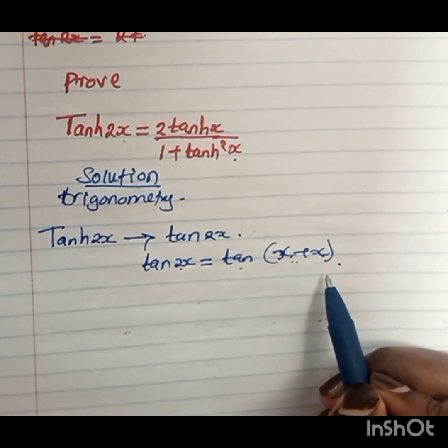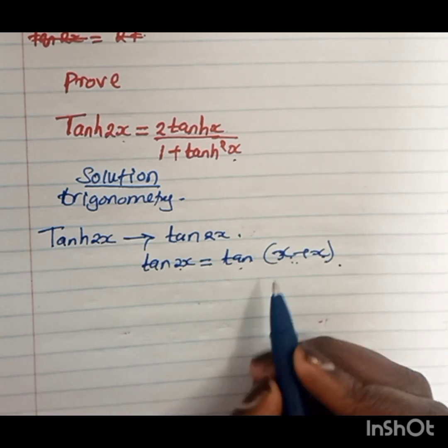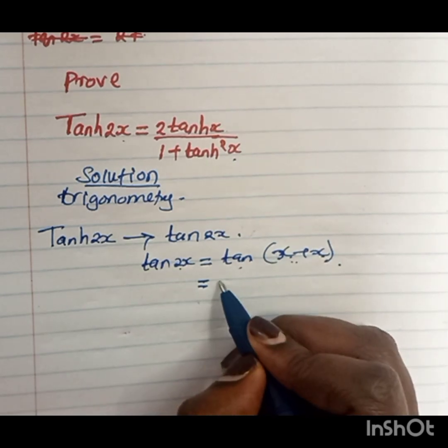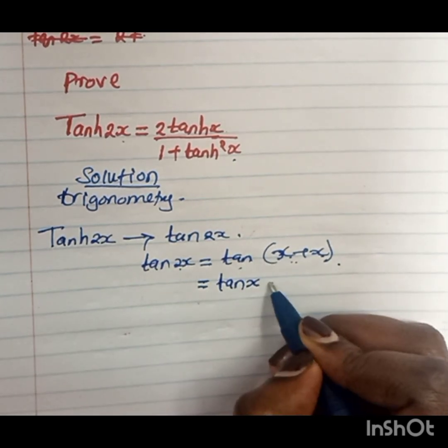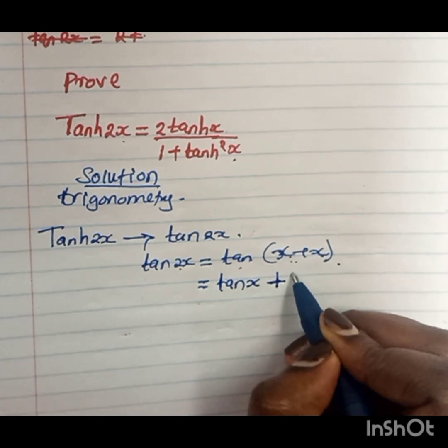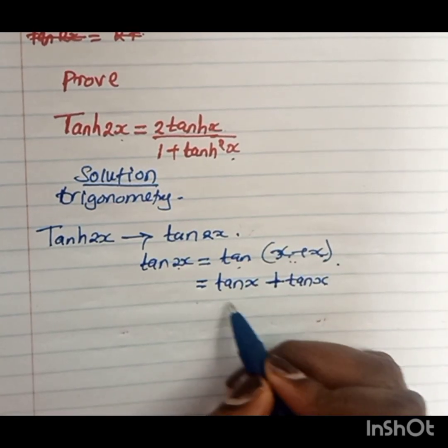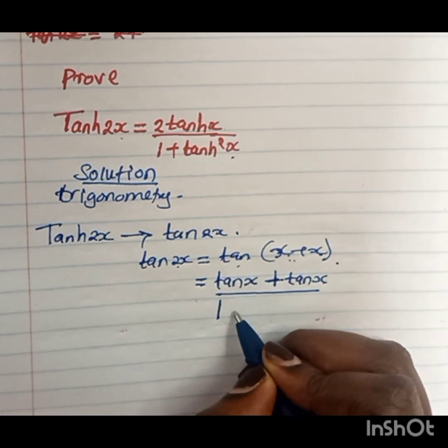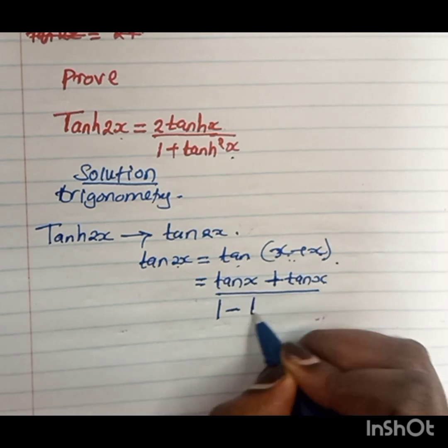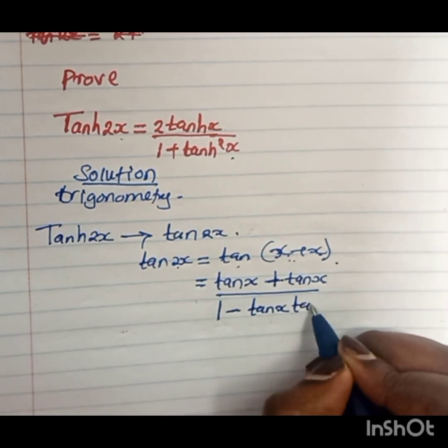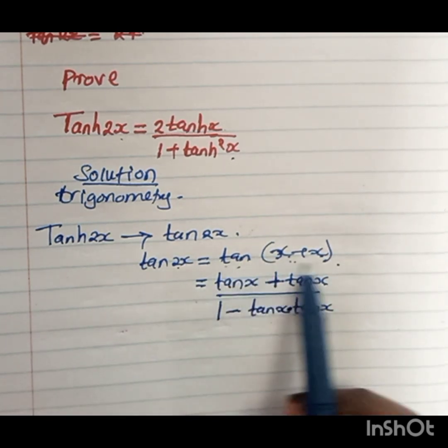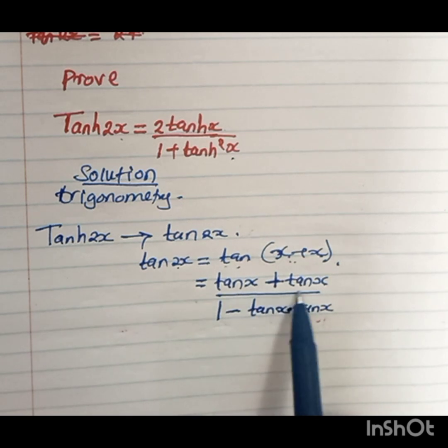So let us start. If I have tan(x+x), this gives me tan x plus tan x divided by 1 minus tan x times tan x.